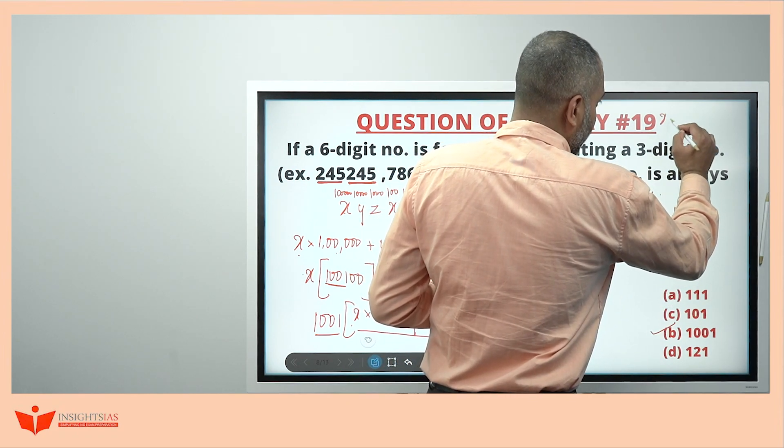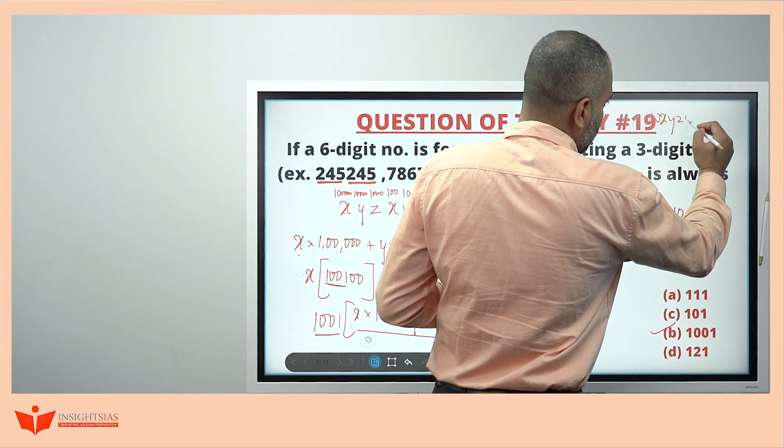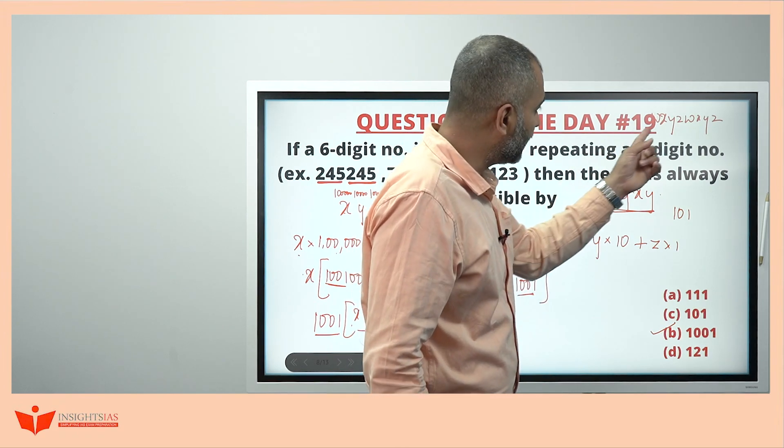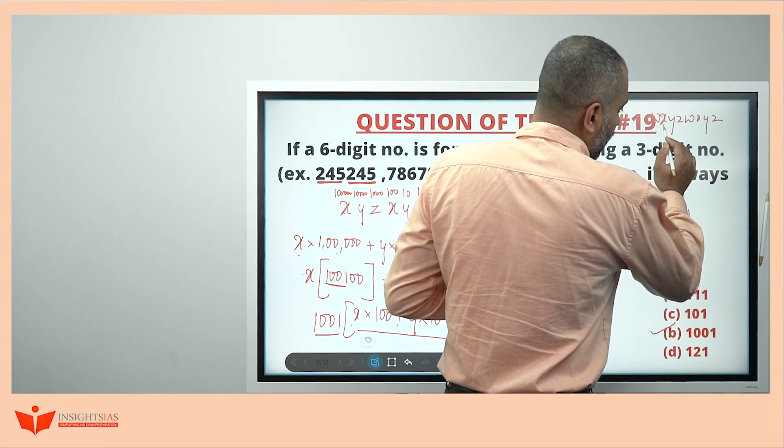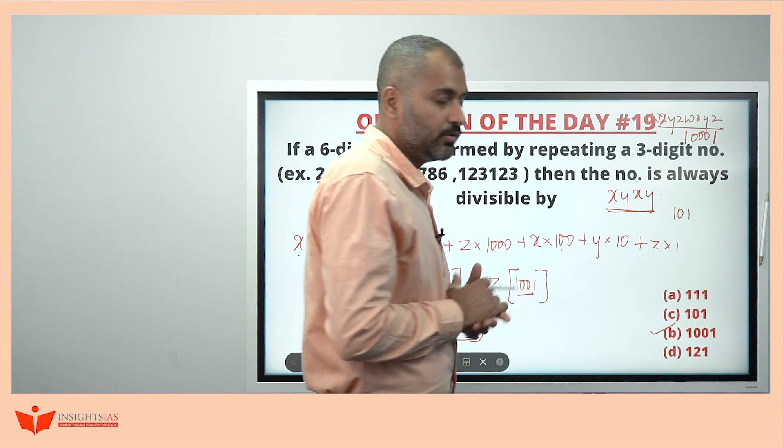Similarly, if it is an 8 digit number, for example, w x y z, w x y z. Okay. This is an 8 digit number formed by repeating 4 digit twice. This is always divisible by 10001 and this continues.